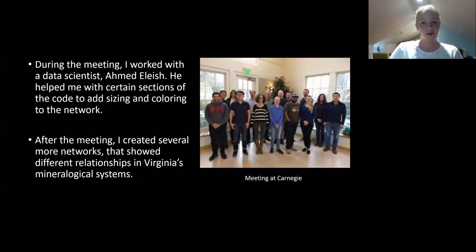During this meeting, I worked with a data scientist, Ahmed Elish. He helped me with certain sections of the code to add size and then coloring to the network, which displayed more data. After this meeting, I created several more networks that showed different relationships in Virginia's mineral system. The picture on the right is of everyone at the meeting at Carnegie. It's not a great picture, but that was all the data scientists and mineralogists that were there.